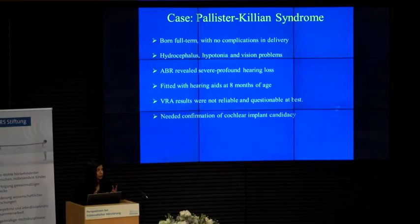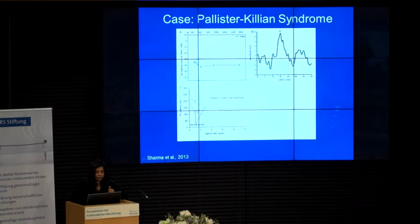Then there was a child with Pallister-Killian syndrome — a very severe syndrome with hydrocephalus. The child was very seriously impaired, and they didn't know whether to implant or not. Again, the clinician was very unsure of the behavioral responses. But we got a very clear P1 many times, and it was always outside of normal limits. The surgeon went ahead and implanted, and we are monitoring this child. Again, you can use neuroplasticity to help with decision-making.